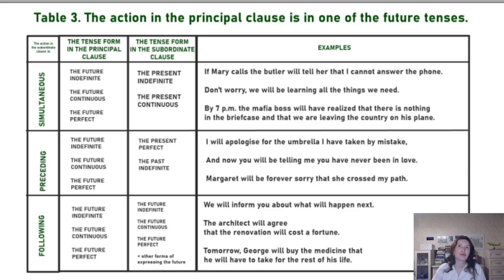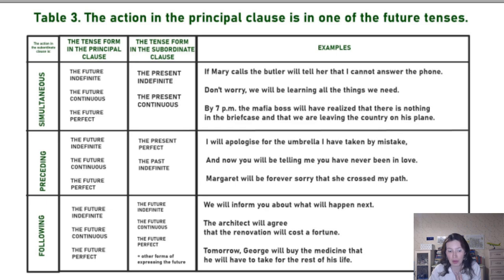'I will show you the Statue of Liberty that stands on an island.' At the moment when I'm going to be showing you the Statue of Liberty, it will be standing there — but you don't need to use the second future tense.